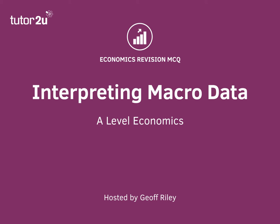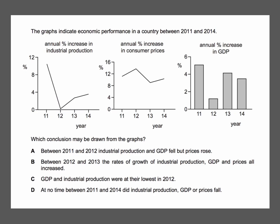This is a question which is data heavy; it's about interpreting some macroeconomic data. We have three graphs, and they indicate the economic performance of a country between the years 2011 through 2014. The question is: which conclusion may be drawn from the data in the graphs?